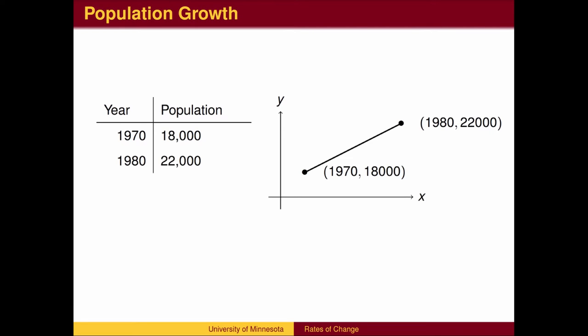Suppose we are interested in the population growth of a town and know the population in both 1970 and 1980. Let's assume the population is growing at a constant rate and therefore the graph of the population is a straight line.